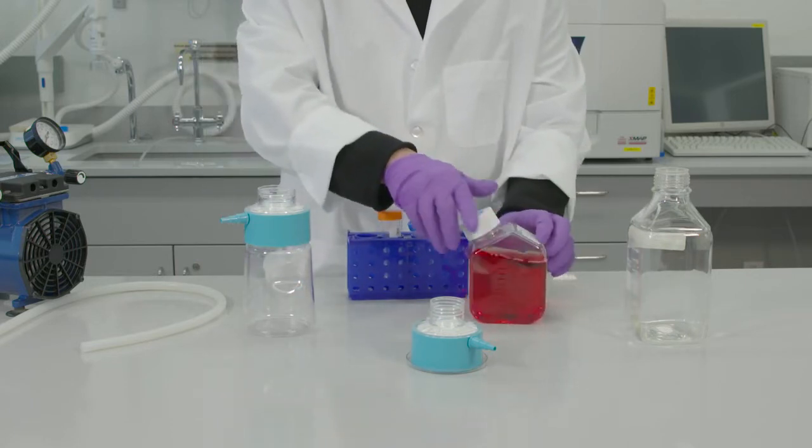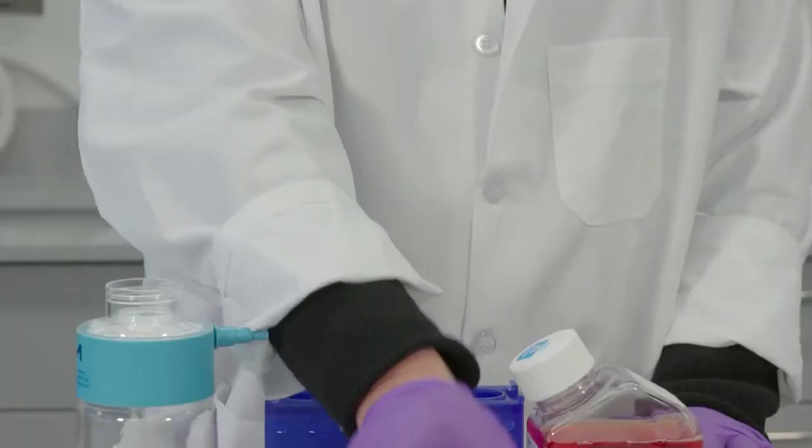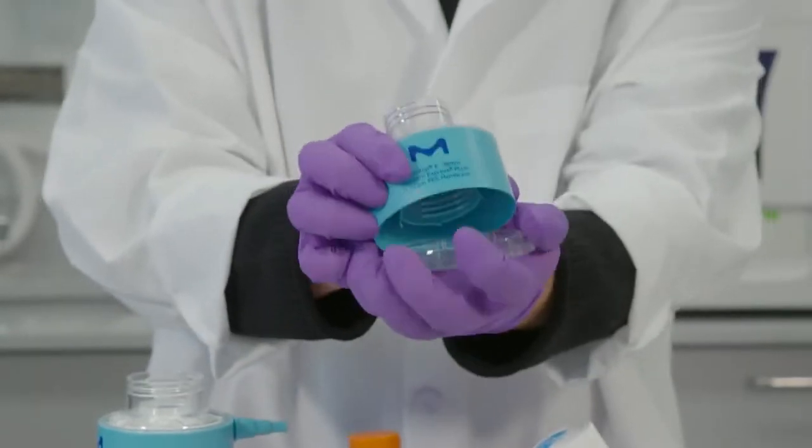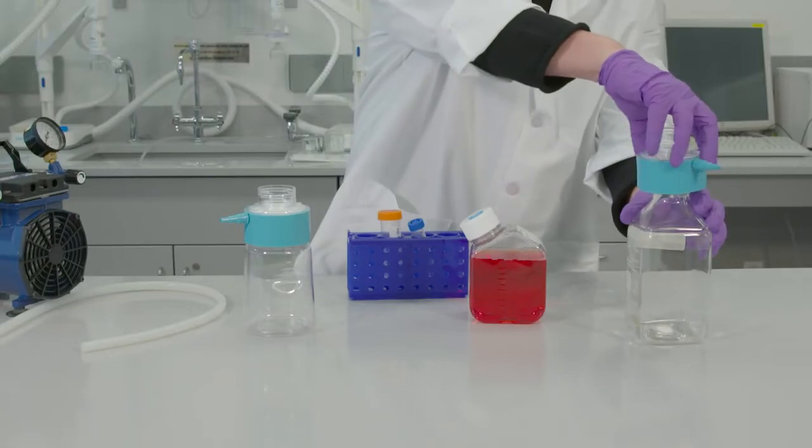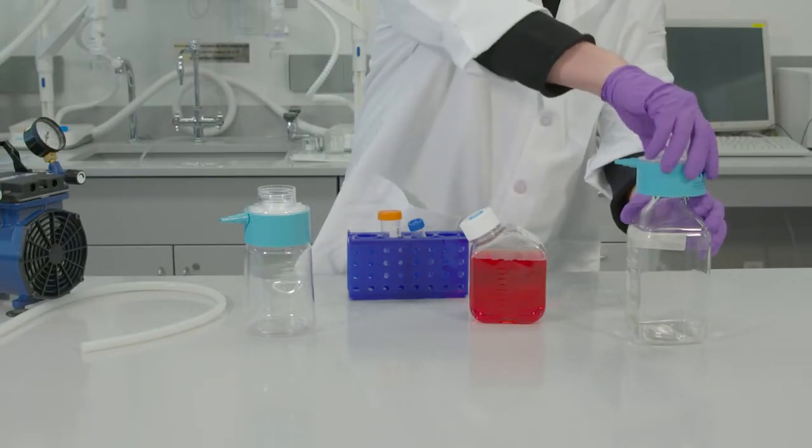If using the SteriTOP E device, remove lid from the base of the device, then screw the filter into the top of a glass bottle with a 45 millimeter neck size.